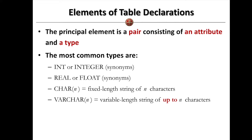We have two different ways to declare strings. We can either write them as char(n), where n is a number. This denotes a fixed-length string with n characters. So if some strings are fixed-length — such as VRN numbers, passport numbers, or social security numbers — the length of the strings is a fixed length. In that case, we have to declare them as char(n), a fixed-length string type.